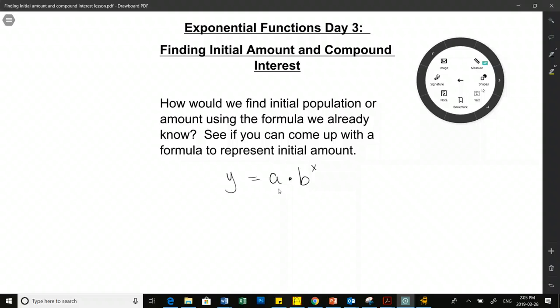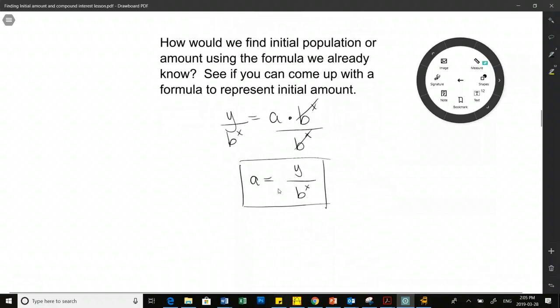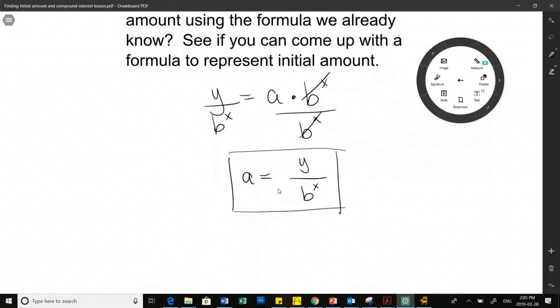Sam? a equals y times bx. Not times. Divided by. Divided by, yeah. So if I wanted to rearrange this, I'd be dividing out my b to the x and then I would have initial value pre-rearranged. So when you get a test or a quiz it would be maybe just a nice quick thing that you could do to rearrange our future value formula in terms of initial value and then if you have any of those questions you can just sub right away into this formula.